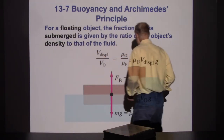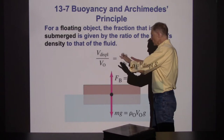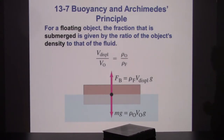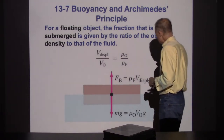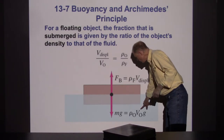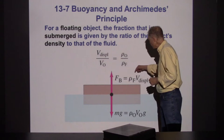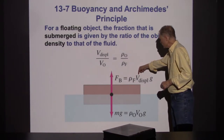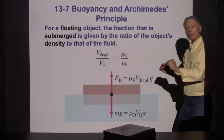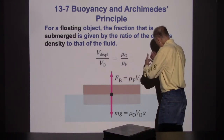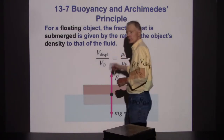Where that formula comes from: if something is floating, it has reached equilibrium — not accelerating upward or downward. So mg equals the buoyant force: density of object times total volume times g equals density of fluid times displaced volume times g. Cancel out the factors of g, and that's the formula you end up with.